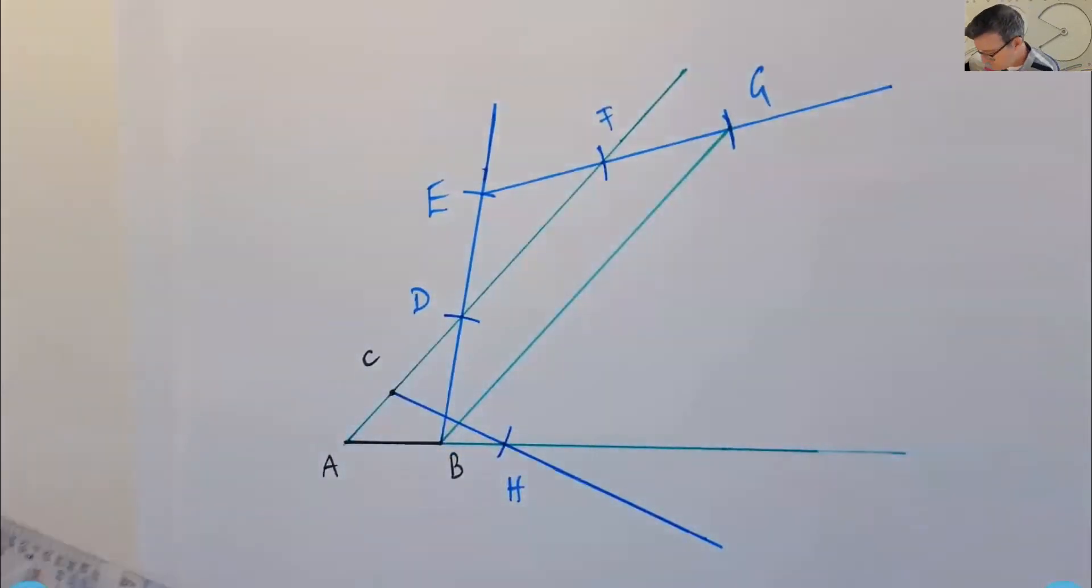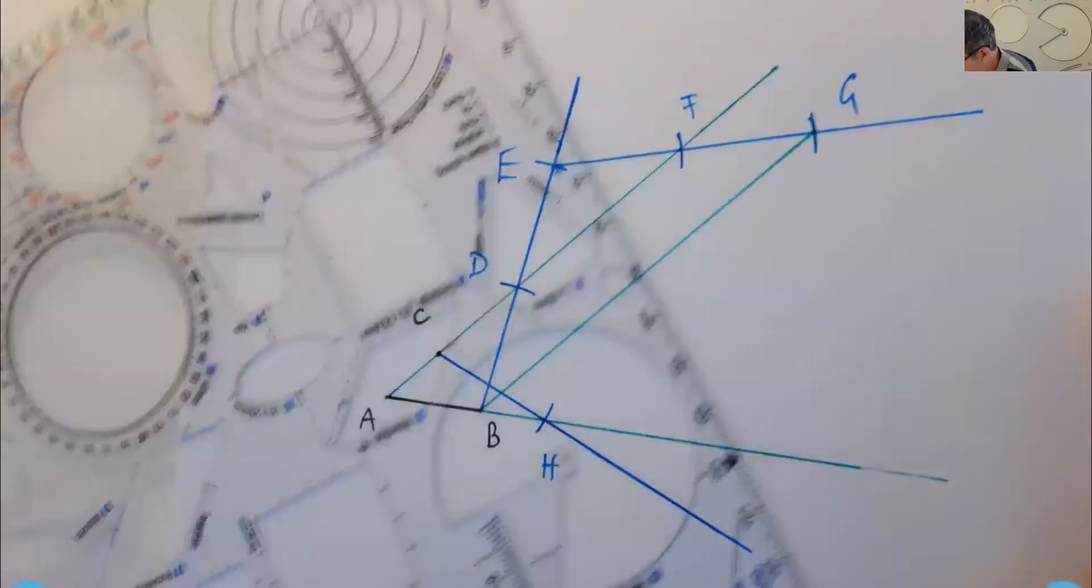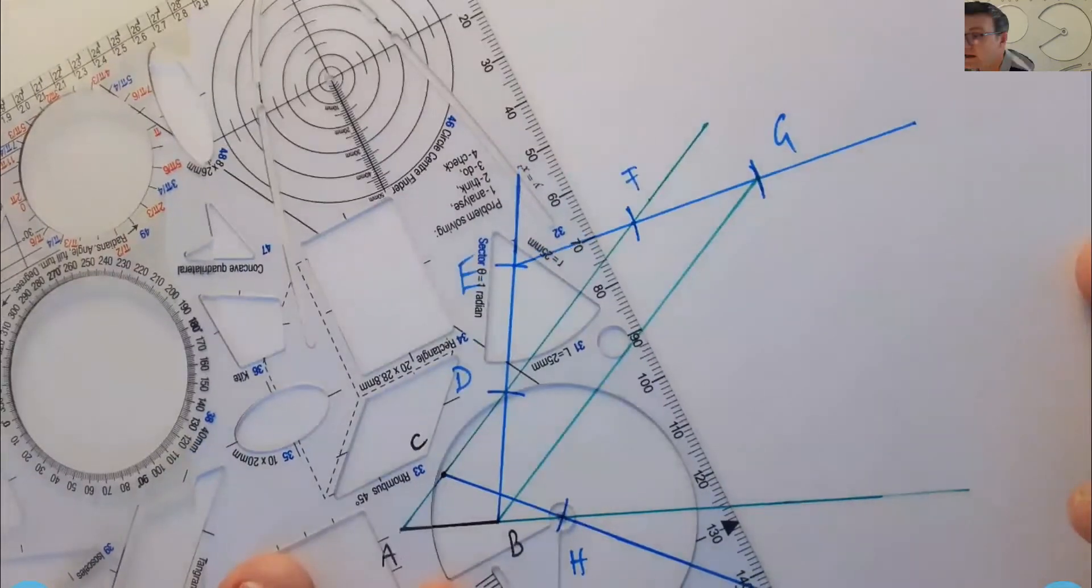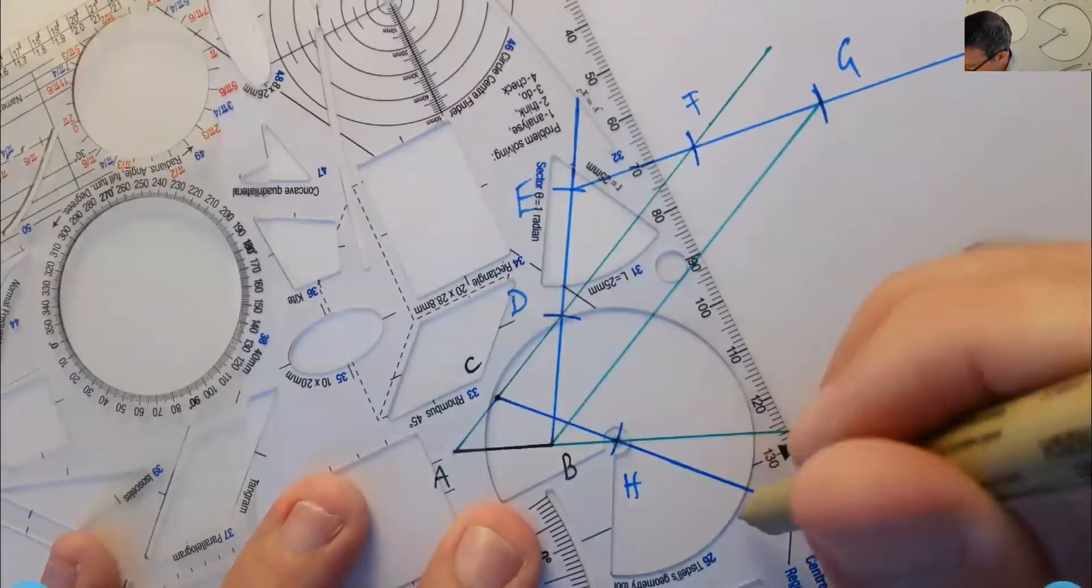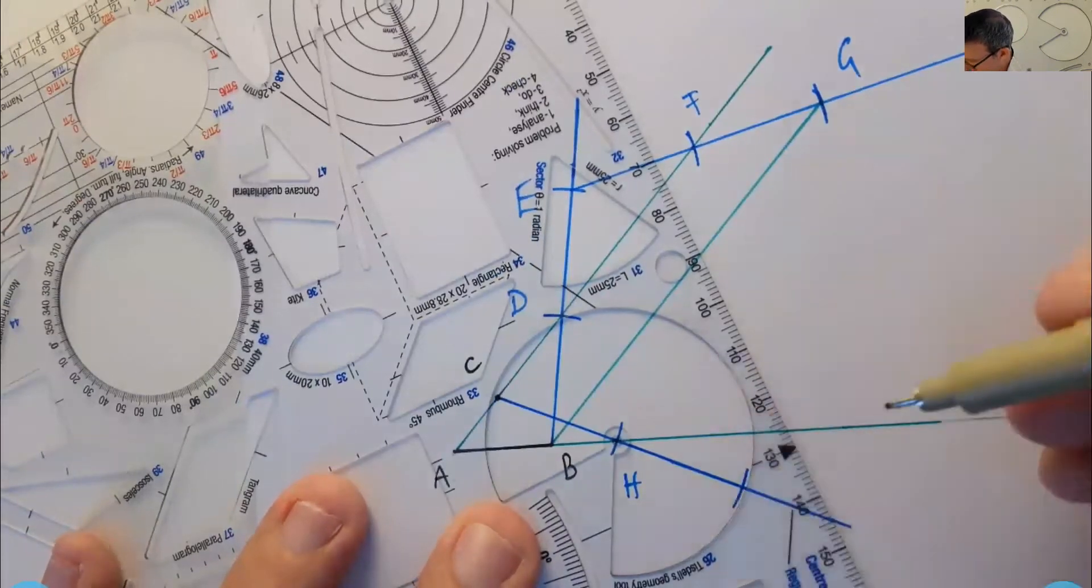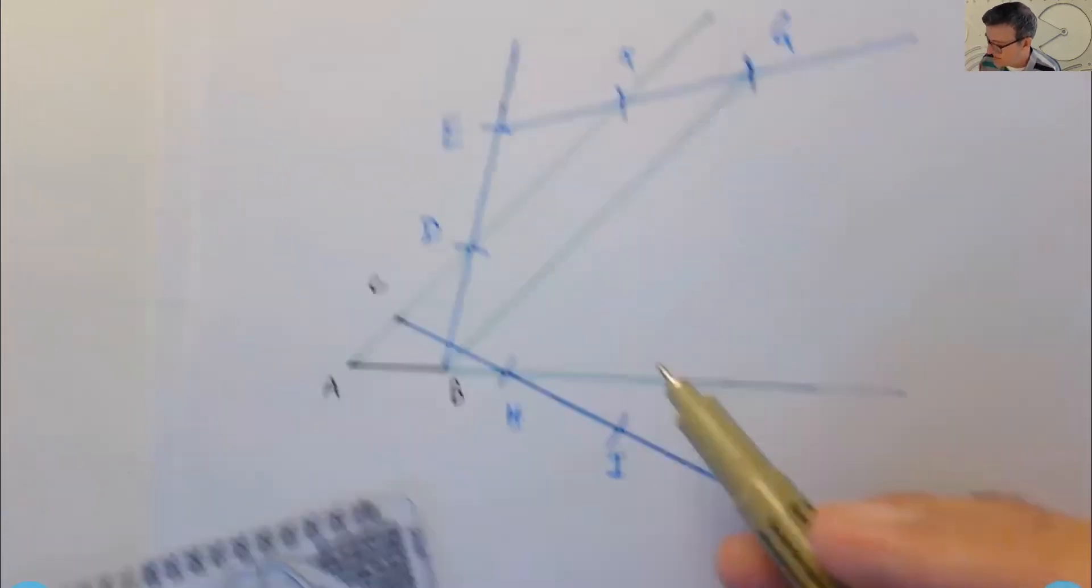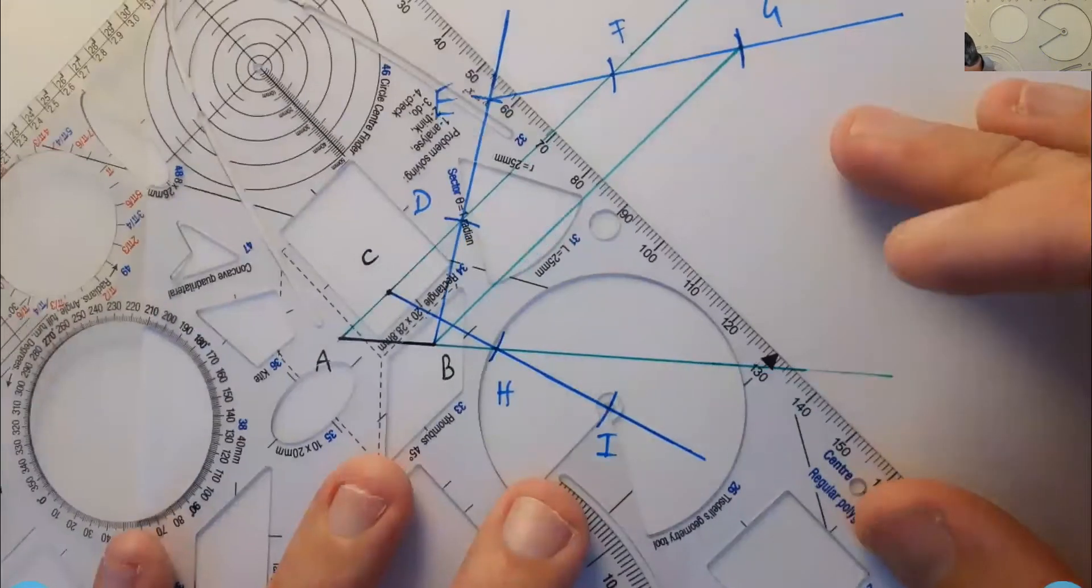And now with that new point H, I can put my circle arc template, the center point there, and then draw a new point of intersection. Let's call that I. And then I want to get back to the green line again. So use that again.